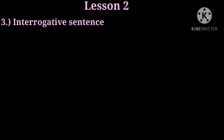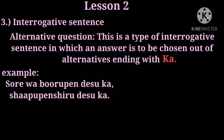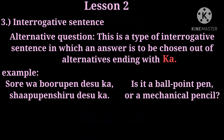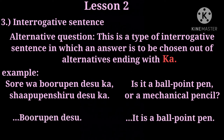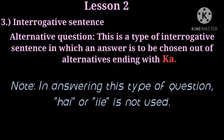Interrogative sentence — alternative question: This is a type of interrogative sentence in which an answer is chosen out of alternatives ending with ka. Example: Sore wa borupen desu ka, shapu penshiru desu ka? — Is it a ballpoint pen or a mechanical pencil? You answer: Borupen desu — it is a ballpoint pen. Note: In answering this type of question, Hai or Iie is not used.